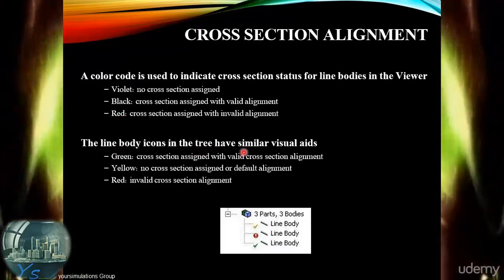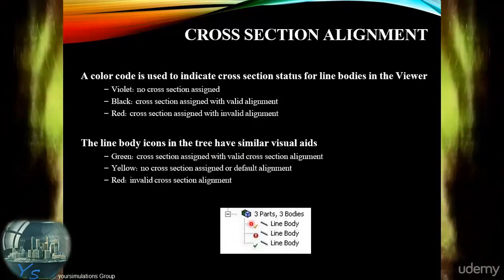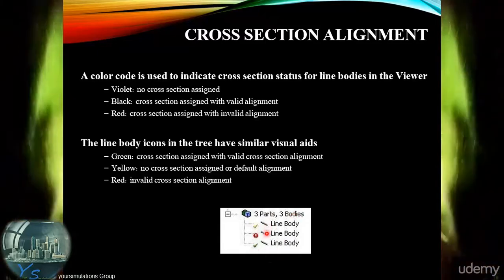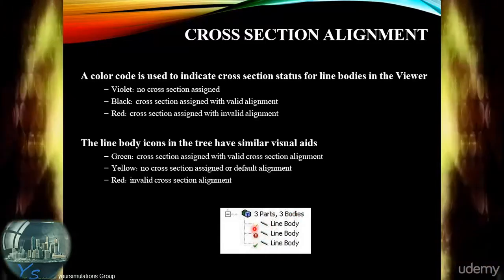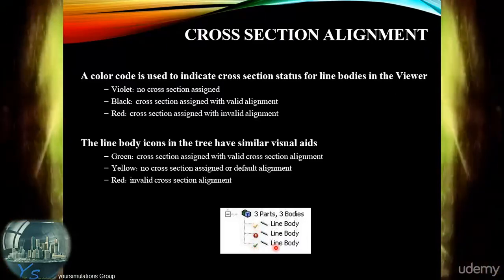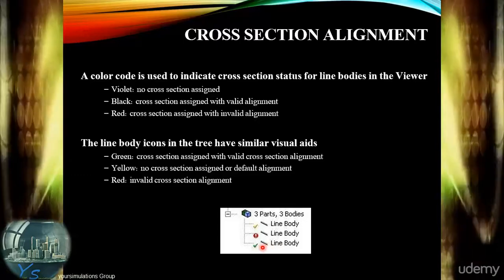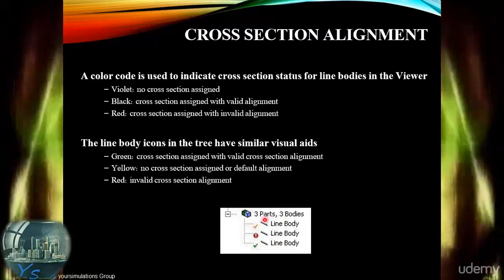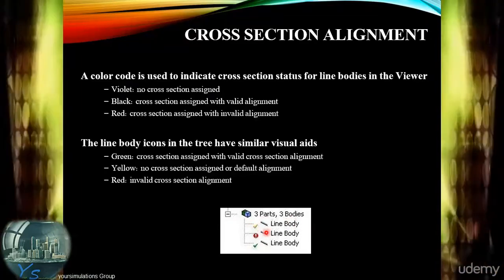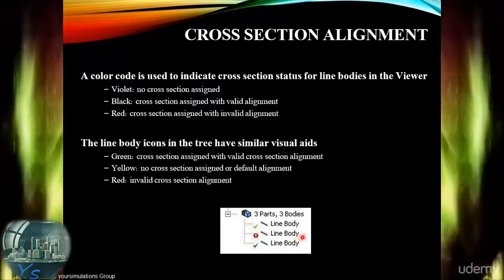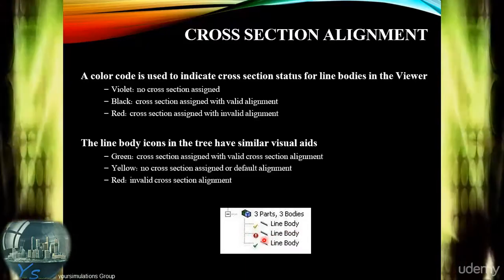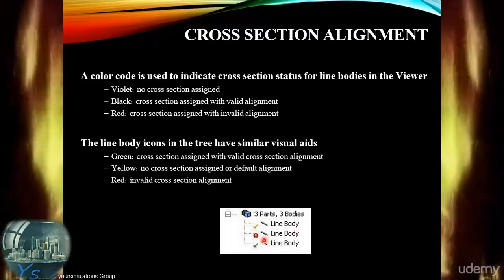The line body icons are also reflected in the tree structure for line bodies under the parts and body tree. They have a small icon listed next to the line body icon to indicate the status. A green tick indicates the cross-section is aligned with a valid alignment. A yellow tick indicates no cross-section alignment or a default alignment. A red icon indicates an invalid cross-section alignment, requiring care and attention to correctly define the alignment.